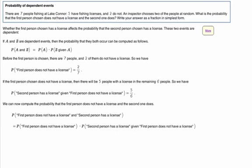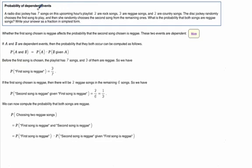Let's look at another example now. So here we're talking about a DJ. He's got seven songs on his upcoming hour's playlist. Two are rock, three are reggae, two are country. The disc jockey randomly chooses the first song to play and then randomly chooses the second. What's the probability that both songs are reggae? So, once again,